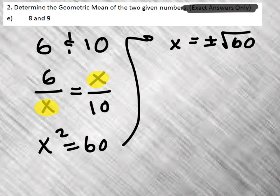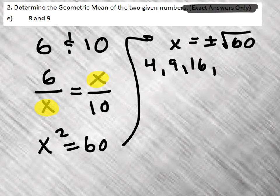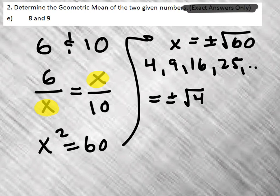And let me quickly mark out a few perfect squares: 4, 9, 16, 25, and so on, that go into 60. And I realize that 4 does, 4 times 15 does.